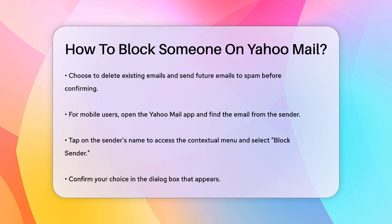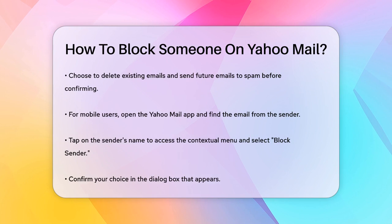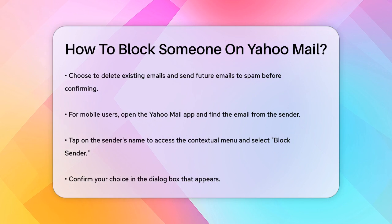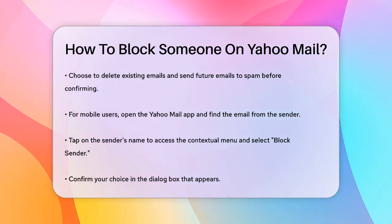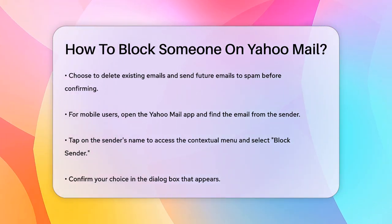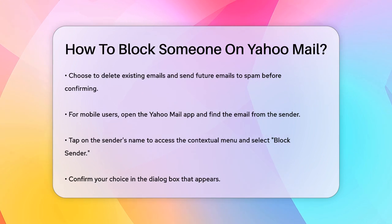For those using the Yahoo Mail app on an iPhone or Android, you can also block senders directly from the app. Open the email from the sender, go to the More menu, and select Block. Here, you can choose to delete all existing emails and move future emails to spam. Confirm your choices by clicking OK.